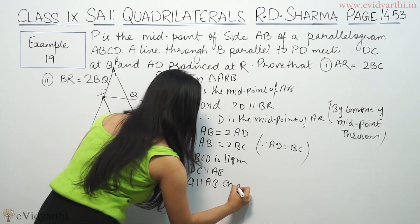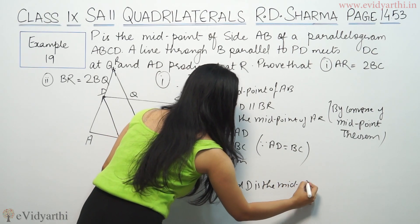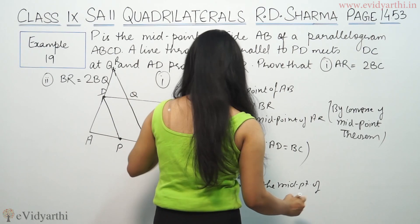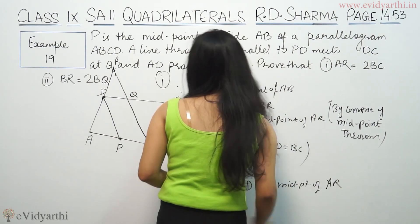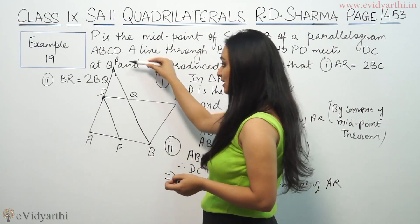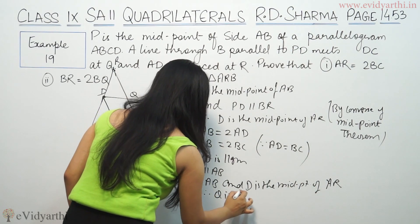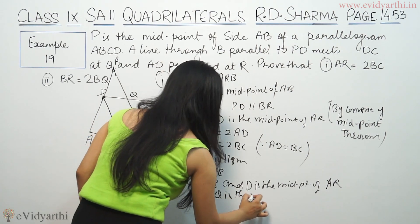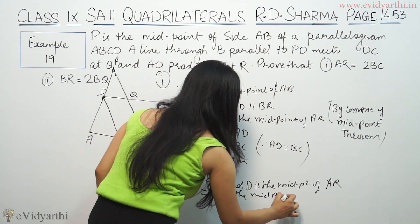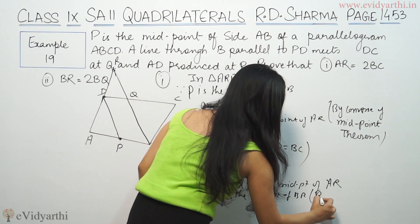D is the midpoint of AR. If D is the midpoint of AR, that means Q is the midpoint of BR. Therefore Q is the midpoint of BR, again by converse of midpoint theorem.